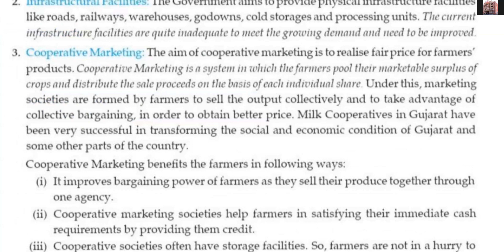It is to realize fair prices for farmers' products. Cooperative marketing is a system in which the farmers pool their marketable surplus of crops and distribute the sale proceeds on the basis of each individual's share. After producing crops and keeping aside what is required for their own consumption, farmers are left with some extra crops — the marketable surplus — which are ready for selling. Each farmer who is a member of a cooperative society pools their crops together, and someone on behalf of all members goes to urban markets and sells the product at better prices. The income is distributed among the farmers on the basis of their share in the total sales.